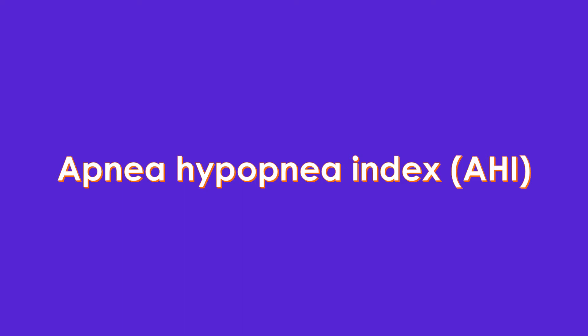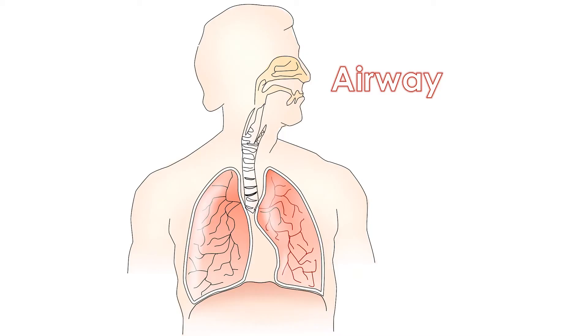Obstructive sleep apnea is due to collapse of the pharyngeal airway during sleep. This obstruction could be partial, causing hypopnea, or complete, causing apnea. Apnea hypopnea index (AHI) is the number of episodes during an hour, with each episode lasting more than 10 seconds. An AHI more than 5 is significant. The pharyngeal airway does not collapse in the awake state due to reflex activation of dilator muscles. This reflex is lost during sleep, but hypercapnia due to the apnea during sleep can stimulate the respiratory drive and cause arousal to activate the reflex.